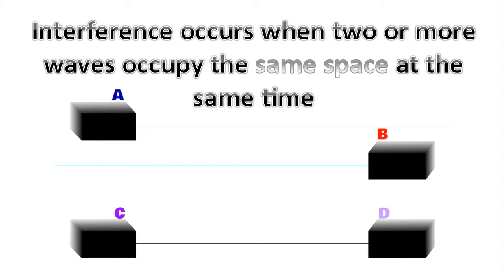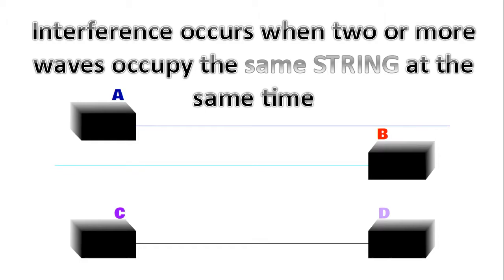Now when will interference occur? It'll occur when two or more waves occupy the same space at the same time. Now for this simulation today, the space is the actual string. So when two or more waves occupy the same string at the same time, we're going to see interference.